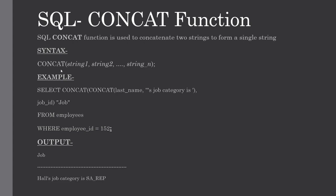This is the basic syntax of a CONCAT function along with a simple example, in which we have concatenated the last name, a string which says 'job category is', and the job ID from the employees table, with a WHERE condition for employee ID equals 152. Here you can see the output is the last name, the string 'job category is', and the job ID.